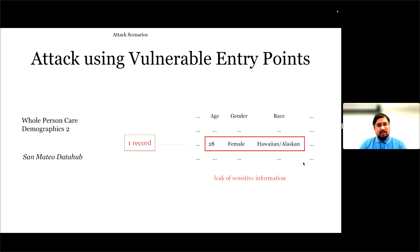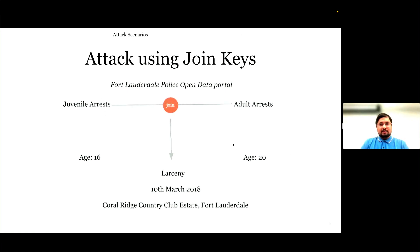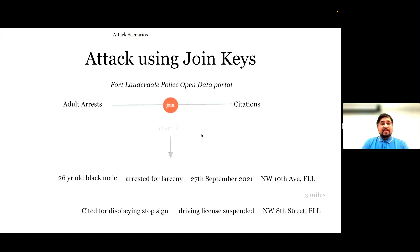We then asked: can these open datasets be really joined using some attributes? When we joined two datasets from the Fort Lauderdale Police Open Data portal, we found that two individuals, age 16 and age 20, measured separately in these datasets, were involved in the same incident of larceny on this date and at this location. In another example, the presence of a direct ID field like case ID helped us join two datasets from the same open data portal. We found that a 26-year-old Black male arrested for larceny on this date was also cited for disobeying a stop sign and driving while his license was suspended, just three miles away.